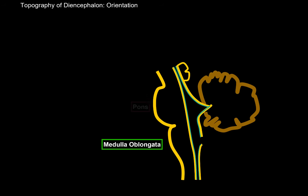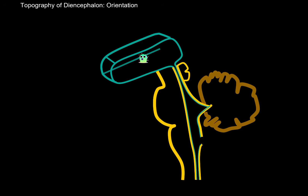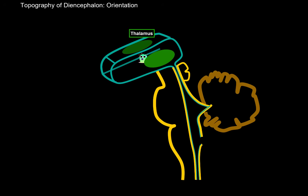Using an orientation scheme: imagine a little figure swimming in the cerebrospinal fluid within the fourth ventricle. Swimming upwards through the aqueduct of the midbrain until reaching the third ventricle. From that standpoint, looking right and left, you'll see the thalamus on either side of the third ventricle. So the thalamus is our first stop.